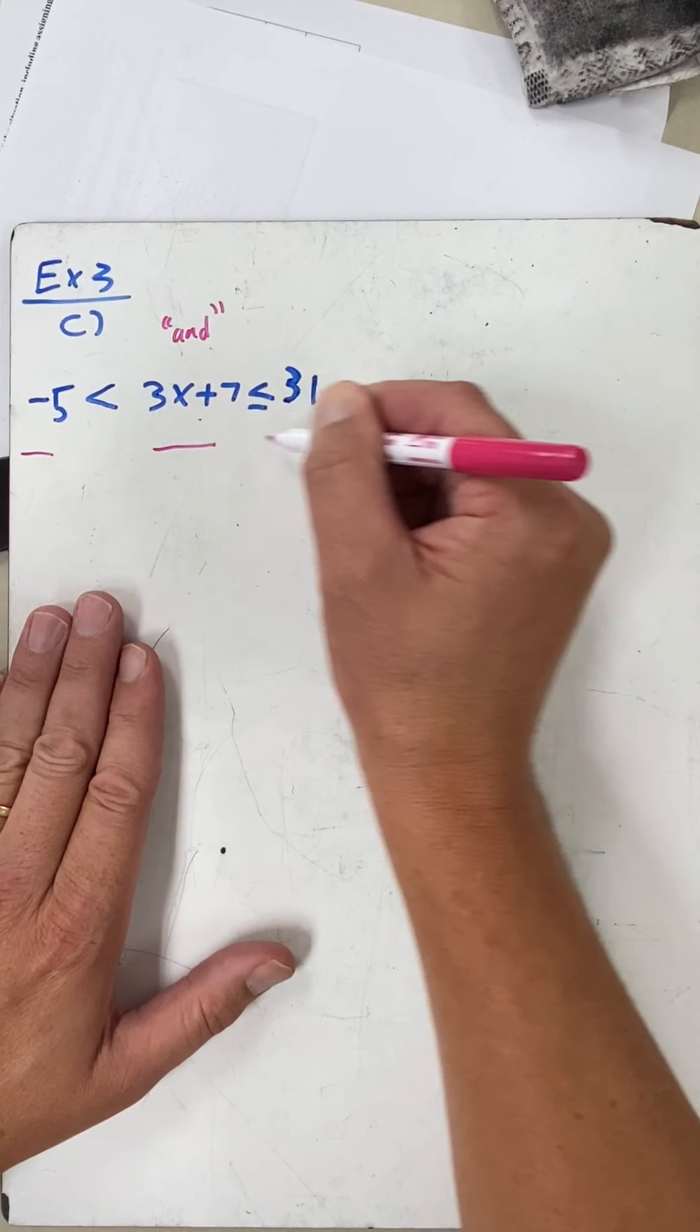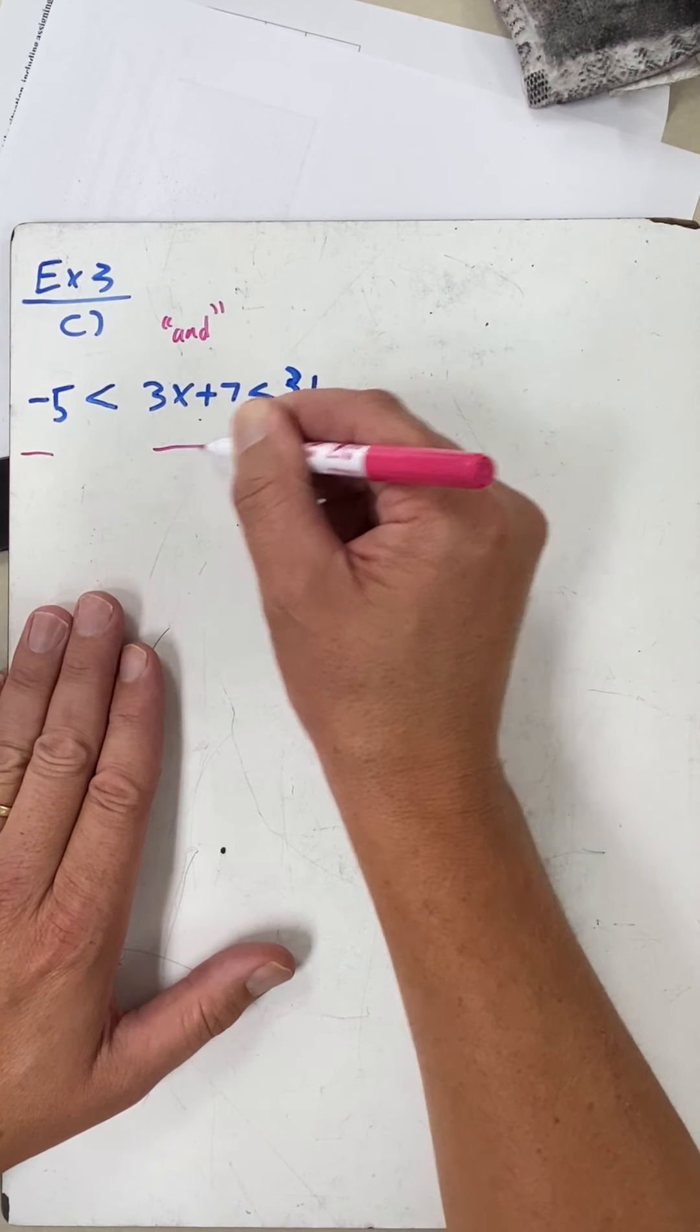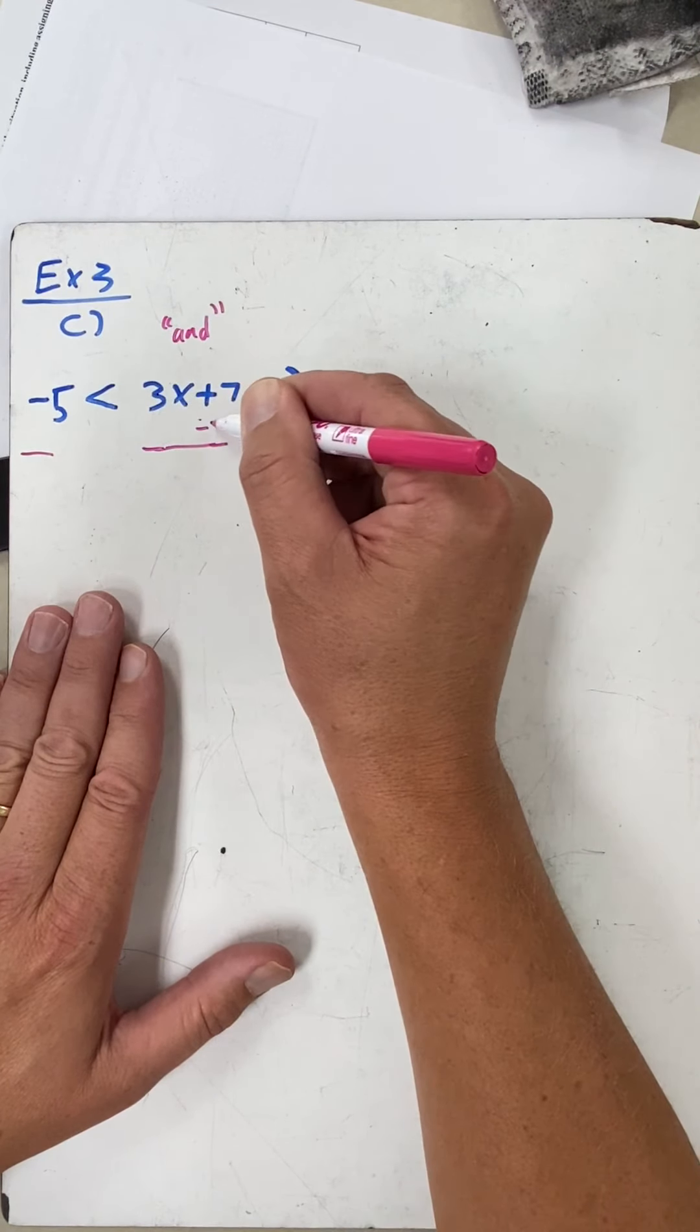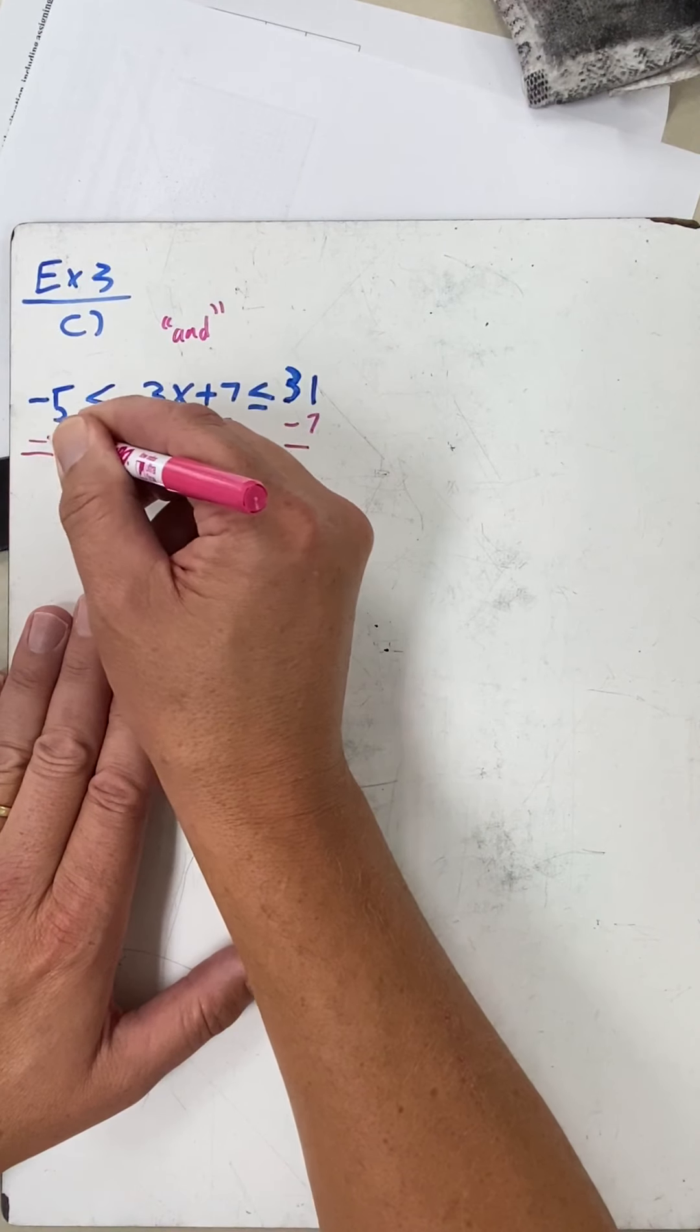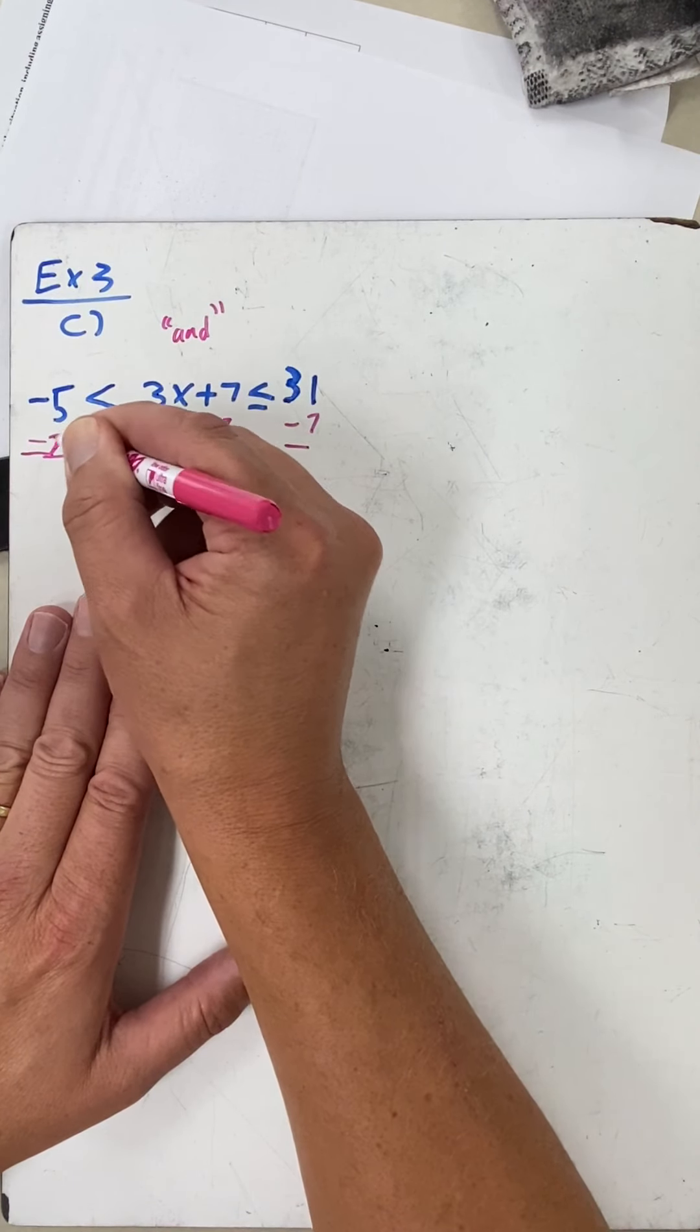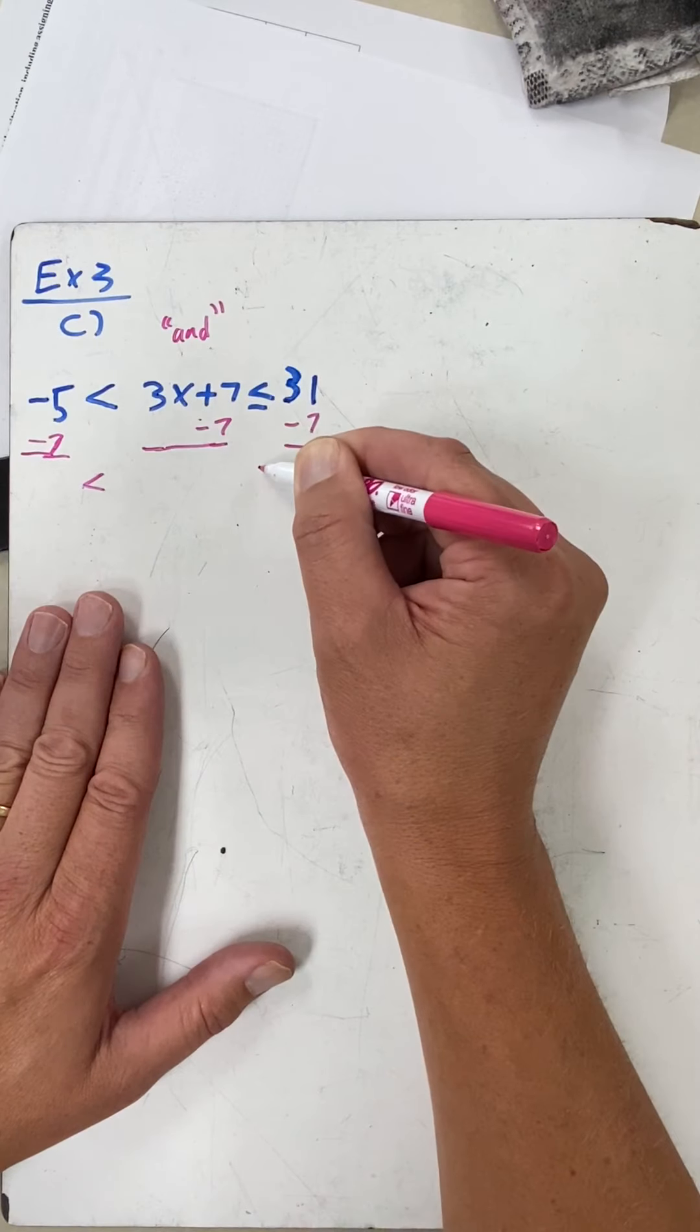So I'm going to go like this, this, and this. I'm going to do the opposite of adding seven—I'm going to subtract here, here, and here, and I'm just going to bring my inequalities straight down.